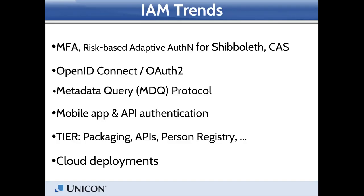OpenID Connect and OAuth 2 have seen strong interest in the broader IAM space, and now there is very strong interest in higher education. The TIER effort is looking at APIs for components to communicate and will largely use OAuth 2 for authentication and authorization around those APIs. Additionally, there was a survey done by InCommon, and it's a work plan item for the InCommon Technical Advisory Committee this year to do a lot of work around how OpenID Connect can be scalable in a federation model that aligns with what we're used to doing with SAML.